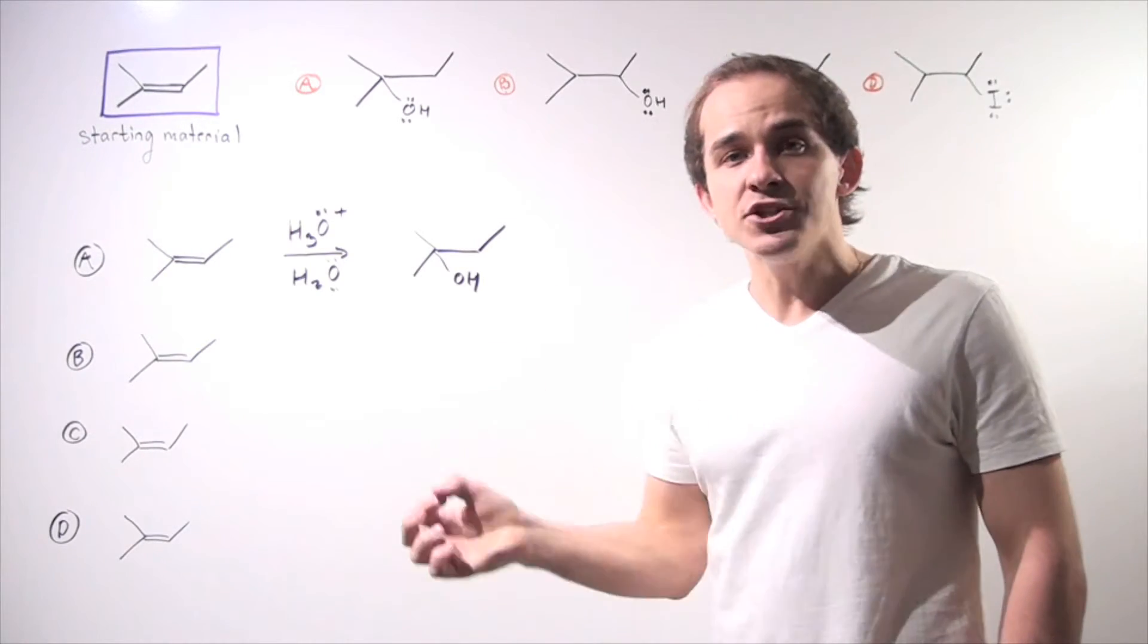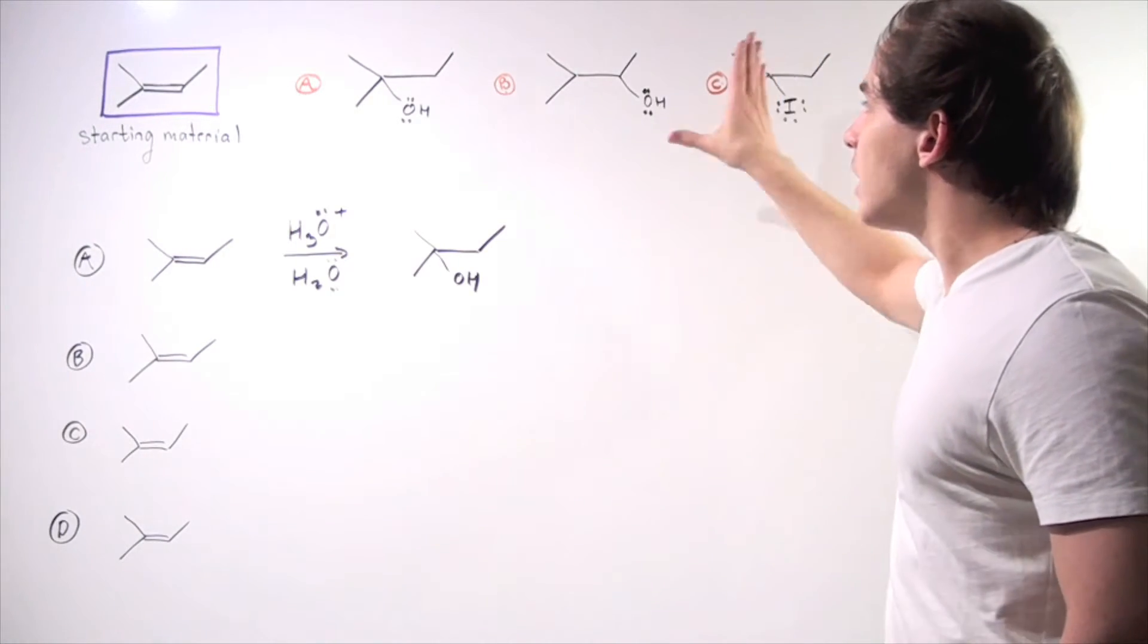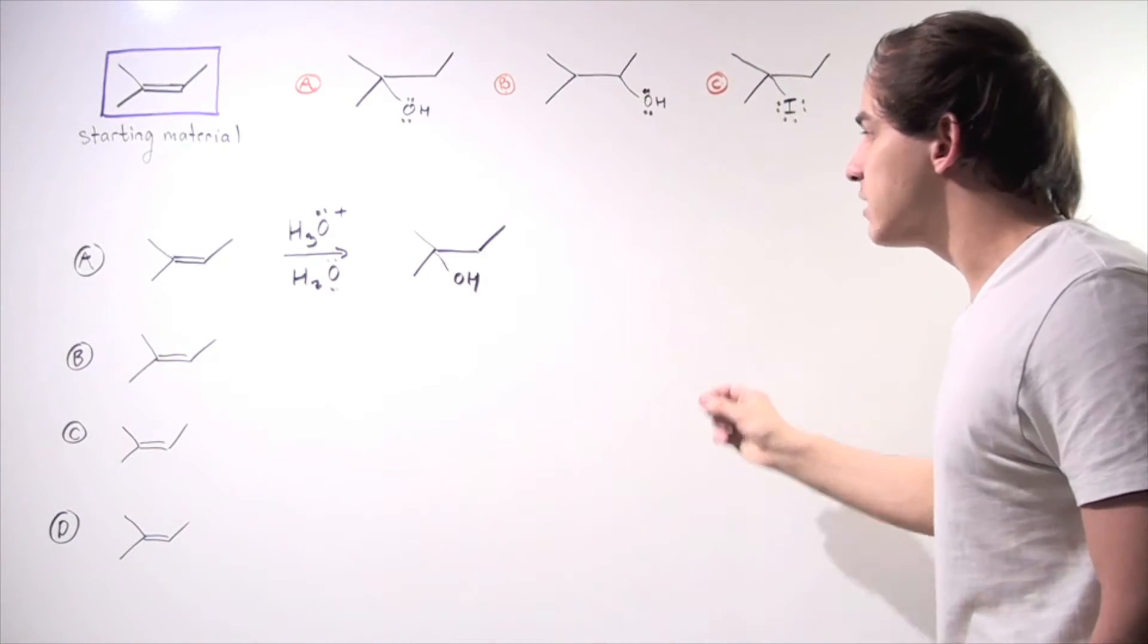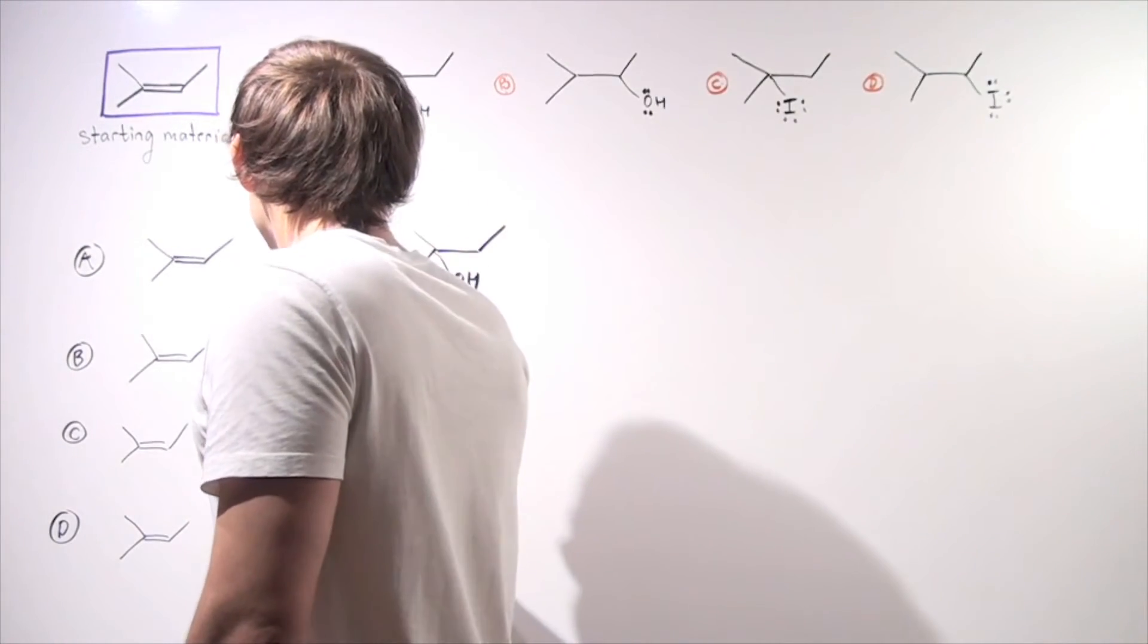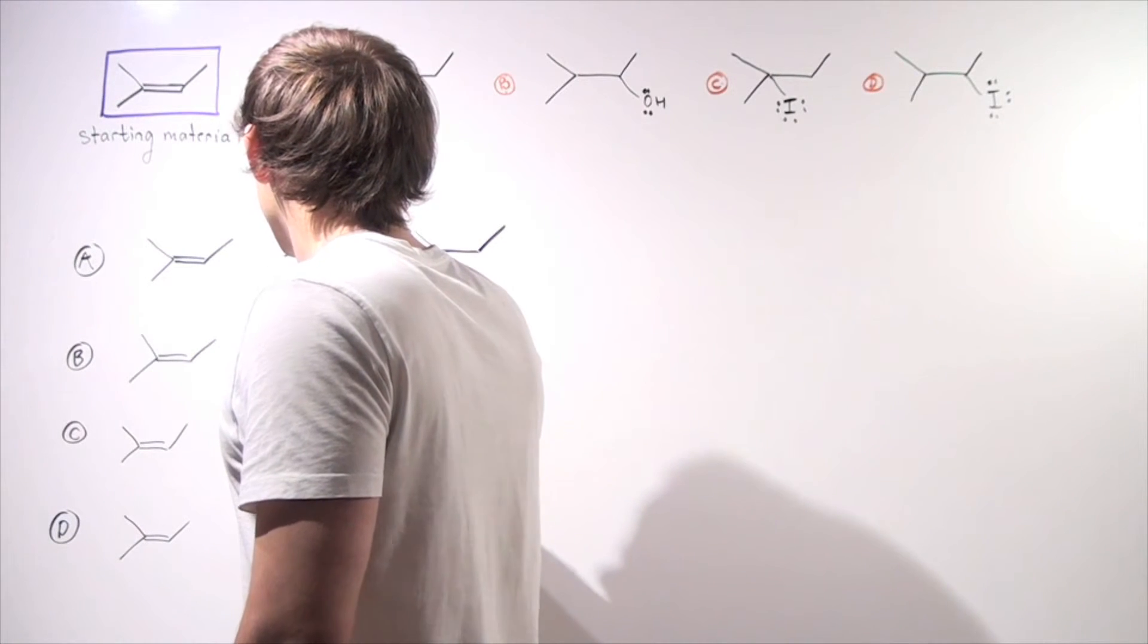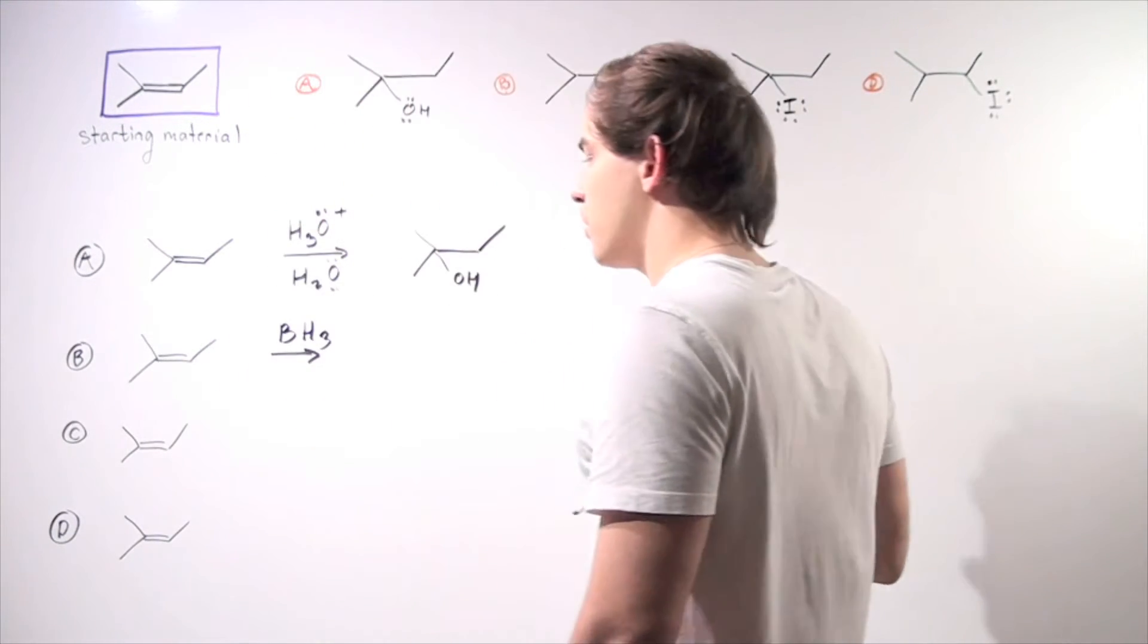Remember, hydroboration allows us to produce the following anti-Markovnikov's product. So our first step is to simply use the following reagent. So we want to use our BH3.